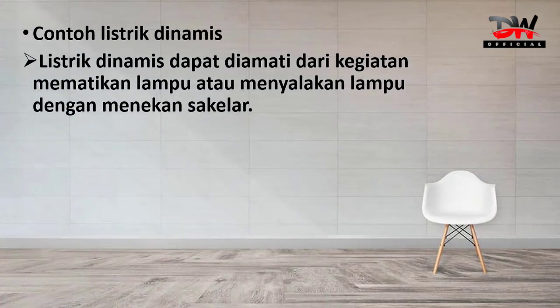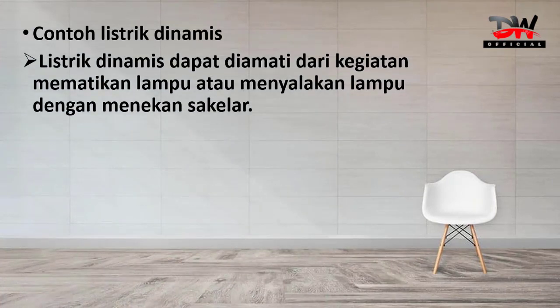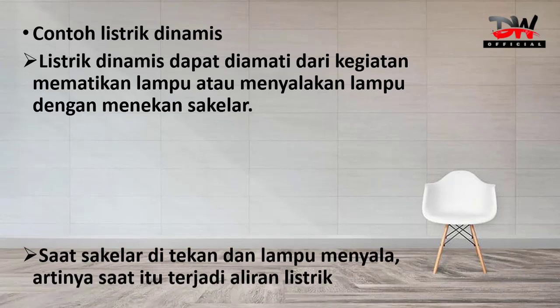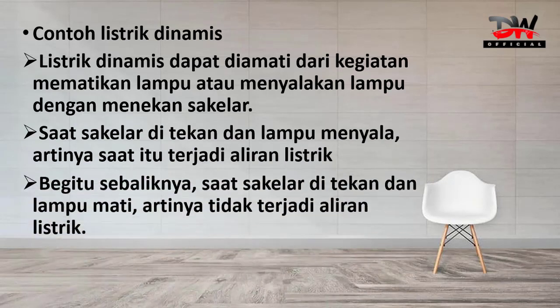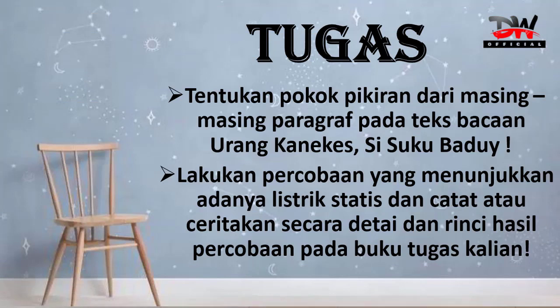Contoh listrik dinamis: listrik dinamis dapat diamati dari kegiatan mematikan lampu atau menyalakan lampu dengan menekan saklar. Saat saklar ditekan dan lampu menyala, artinya saat itu terjadi aliran listrik. Begitu sebaliknya, saat saklar ditekan dan lampu mati, artinya tidak terjadi aliran listrik.